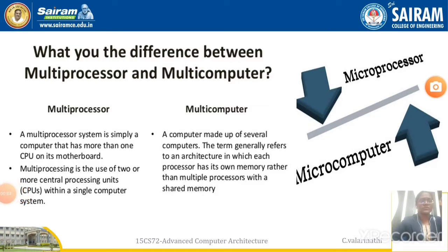In this video we are going to see the difference between multiprocessor and multi-computer. A multiprocessor system is simply a computer that has more than one CPU on its motherboard — that means if you take one motherboard, multiprocessors have more than one processor on a single motherboard.